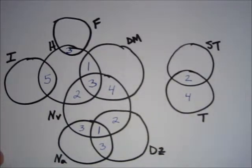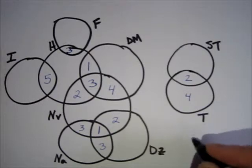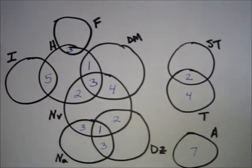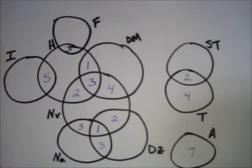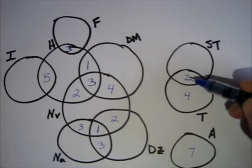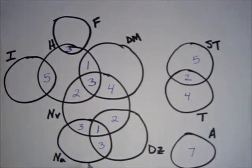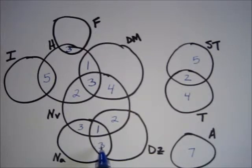Moving up, we get anorexia — seven people. We haven't drawn an anorexia circle yet, so we make a new set with seven people. Continuing up, seven people are in the sore throat category. Here's the sore throat circle — we've used two, so five must be in that region to add up to seven. There were 15 people who experienced nausea. Looking at our nausea circle, we've used three, one, and three — seven total already. There need to be 15 total, so we need eight more people there.